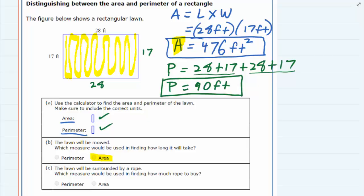For the next question, it says the lawn will be surrounded by a rope, which measure would be used for finding how much rope to buy? If we're surrounding this thing with rope, we're wrapping all the way around the outside, so we're not concerned about the inside, just the outside. That would be our perimeter.